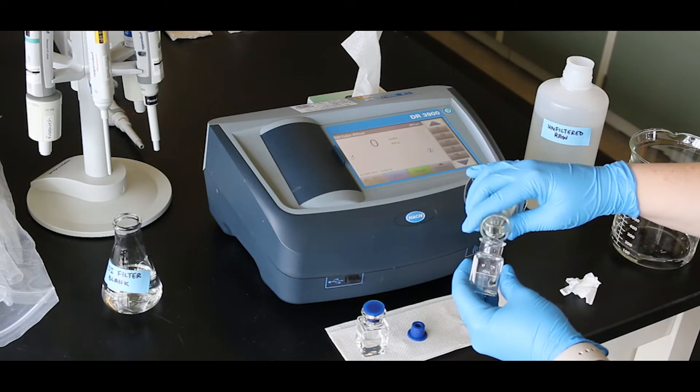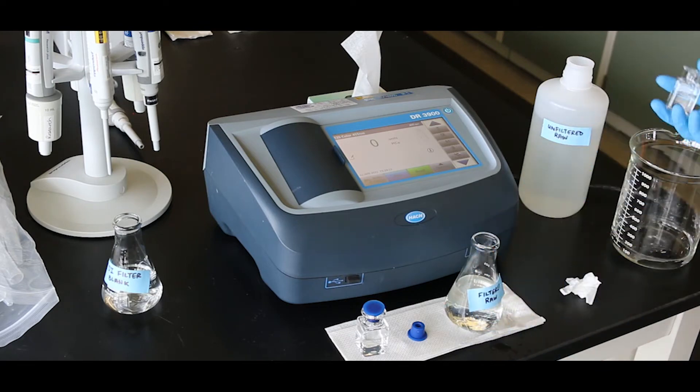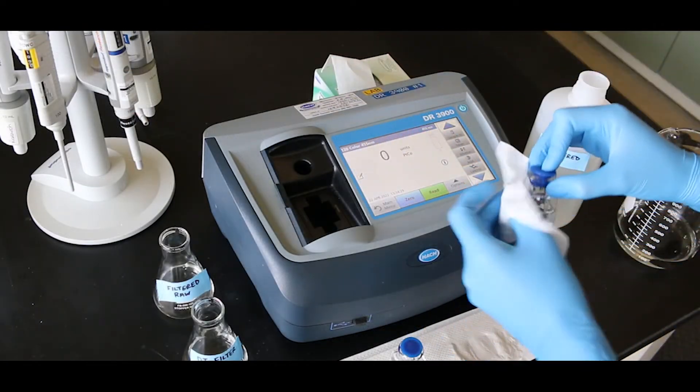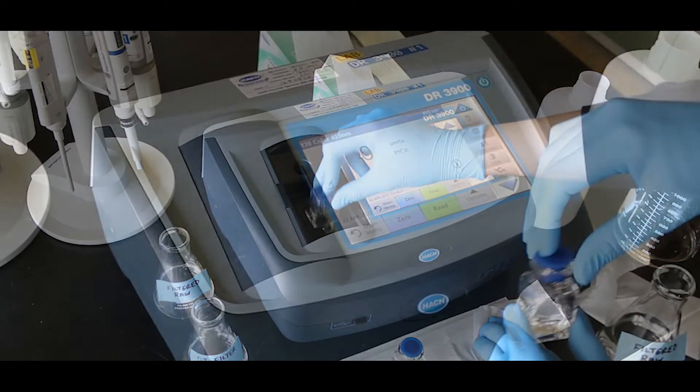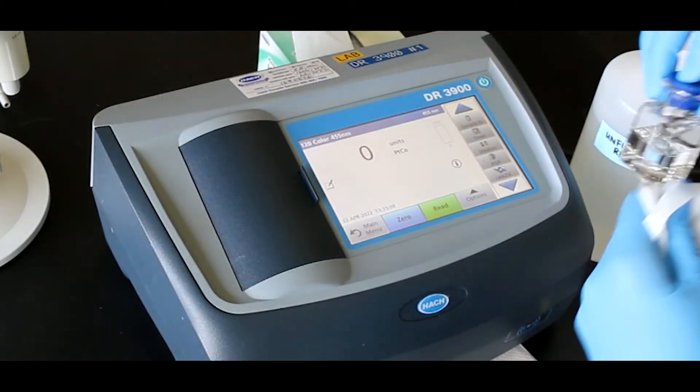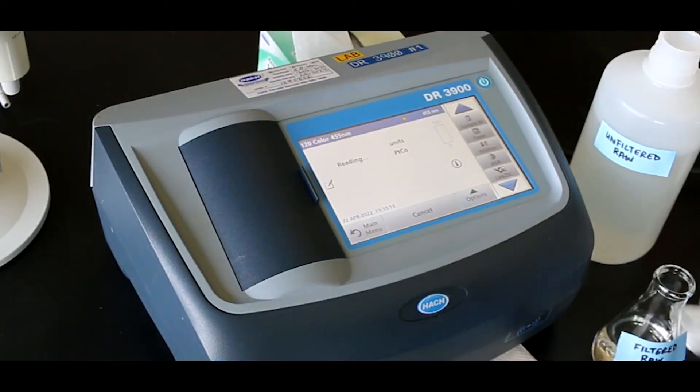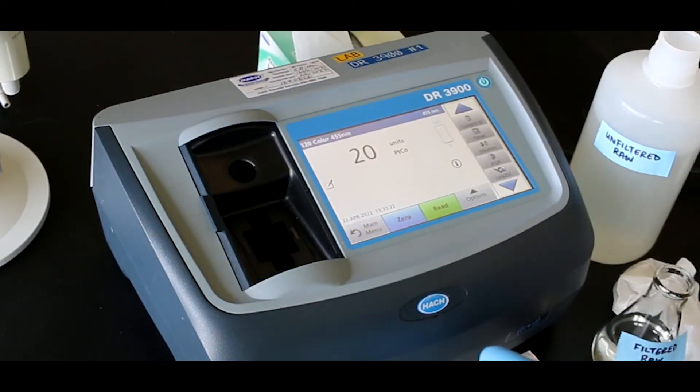Prepare the sample by rinsing and filling with the filtered water sample. Clean the outside of the sample cell and insert it into the instrument. Press read. This value will be your true color measurement. Record the results in platinum cobalt units.